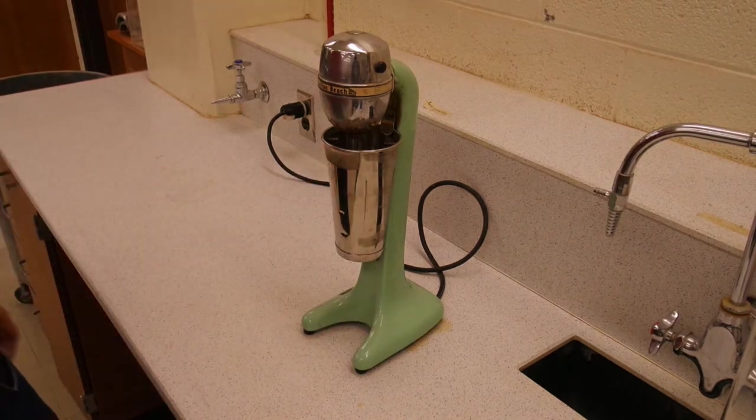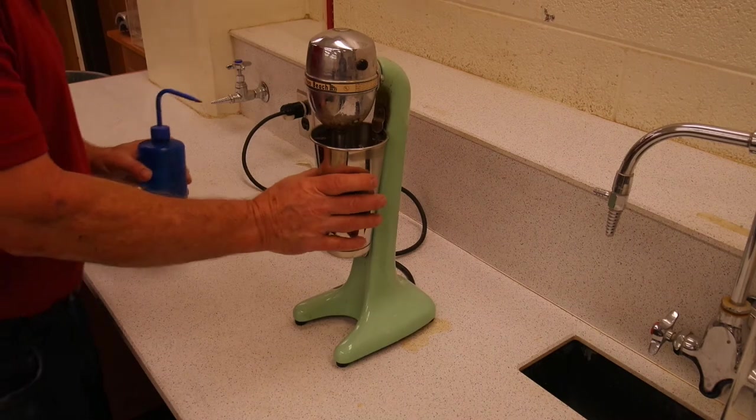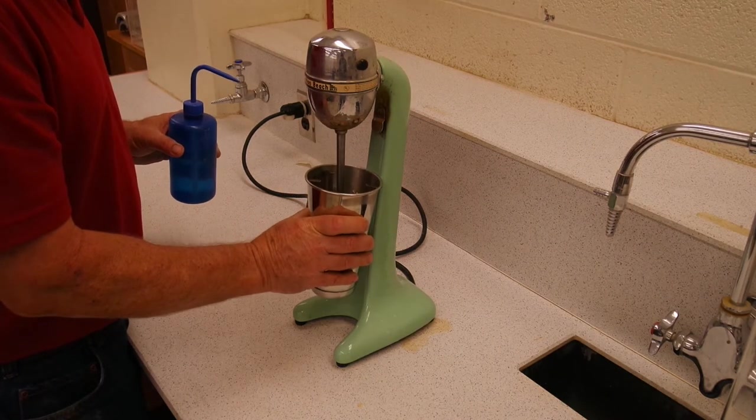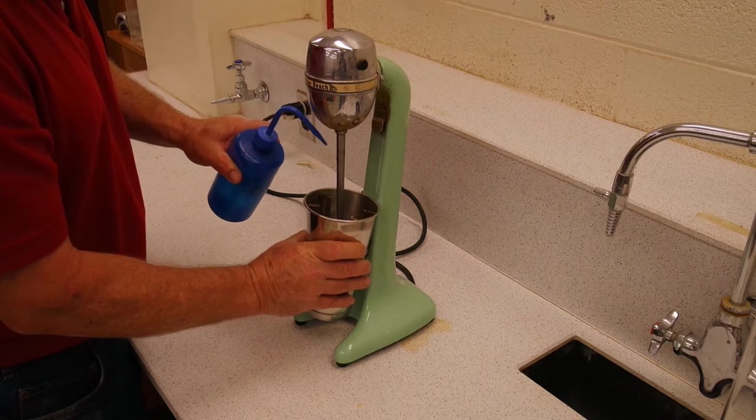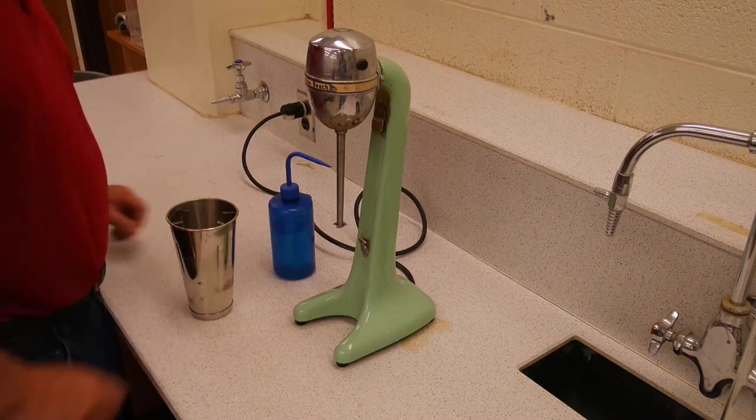Then we will fill the cup up about half full and place it into the mixing apparatus and mix it for one minute. Then we will take our squirt bottle with distilled water and clean off any soil that is stuck to the apparatus, again being careful not to lose any.